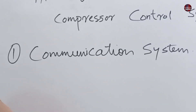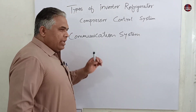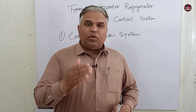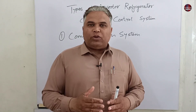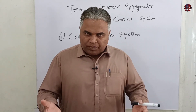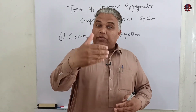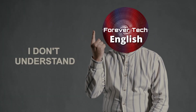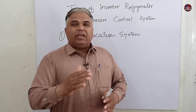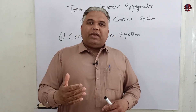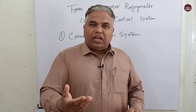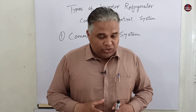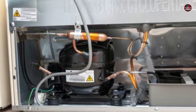The first is the communication system. Communication is always between two people — at least two people should be there to complete a communication, and both communicators should understand one another. If the communicators are not able to understand each other, then it is of no use and the tasks will not be complete. A single person cannot communicate. Always two persons start a communication. The same is true for the inverter refrigerator compressor.